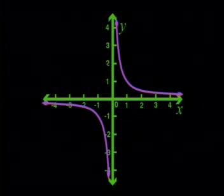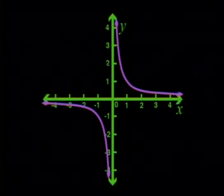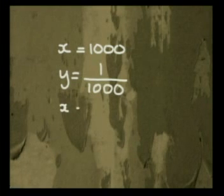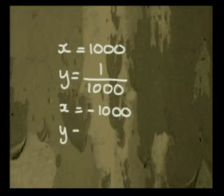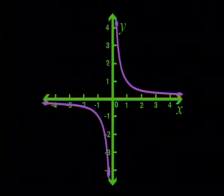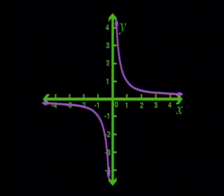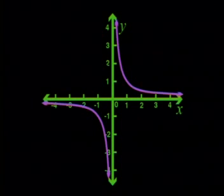That is a very important point. You are quite right. This graph doesn't ever reach the x-axis or the y-axis. If you choose x equal to negative 1,000, you would get y to be negative 1,000th. That is somewhere very far along the x-axis and almost touching the x-axis, but it doesn't touch.